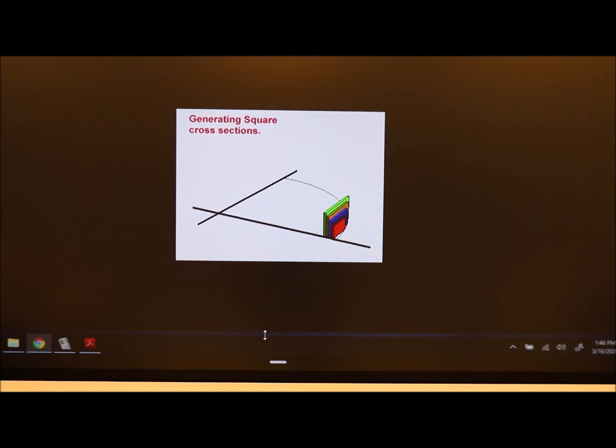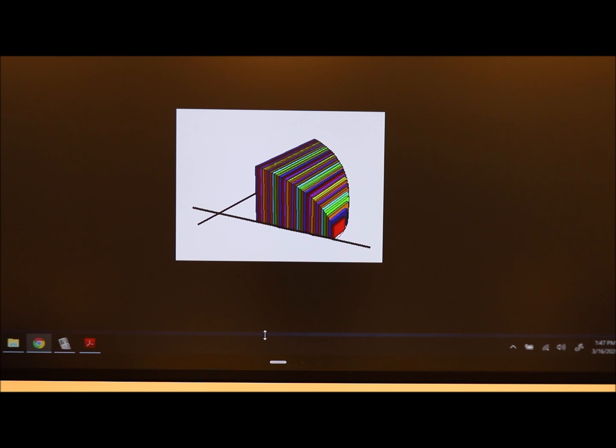Take a look at what I'm projecting here. This is a quarter circle graph and I'm stacking square slices on top of it.